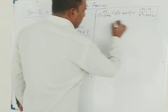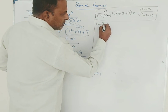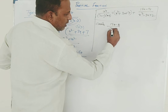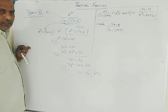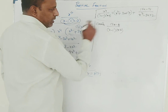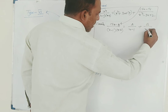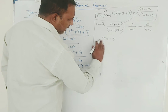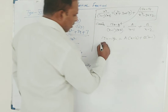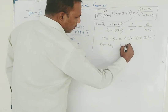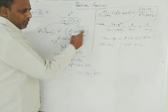This is the first part of the problem. According to the division algorithm, x to the power 4 by x minus 1 times x minus 2 can be written as quotient x squared plus 3x plus 7 plus r of x, which is 15x minus 14, divided by x squared minus 3x plus 2. Now consider r of x by g of x, that is 15x minus 14 by x squared minus 3x plus 2, which equals 15x minus 14 by x minus 1 times x minus 2. This can be split into partial fractions as a times x minus 2 plus b times x minus 1.